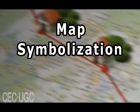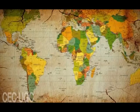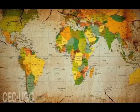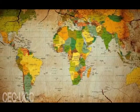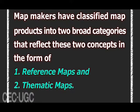Friends, welcome to you all. Today, let us discuss Map Symbolization. Maps are graphic representations of the real world and a way of communicating spatially related information about the world we live in. Map makers have classified map products into two broad categories: reference maps and thematic maps.